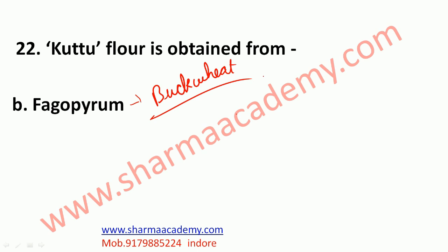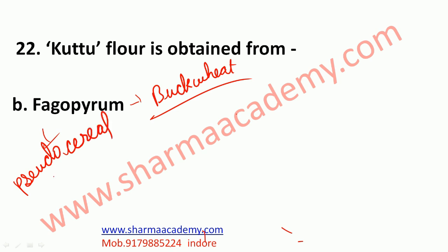This plant is cultivated for its grain-like seeds and is also used as a cover crop. Despite the name, buckwheat is not related to wheat at all, as it is not a grass. Instead, buckwheat is related to sorrel and rhubarb. Its seeds are eaten and it is referred to as a pseudo-cereal — meaning it looks like a cereal but is actually not a cereal.